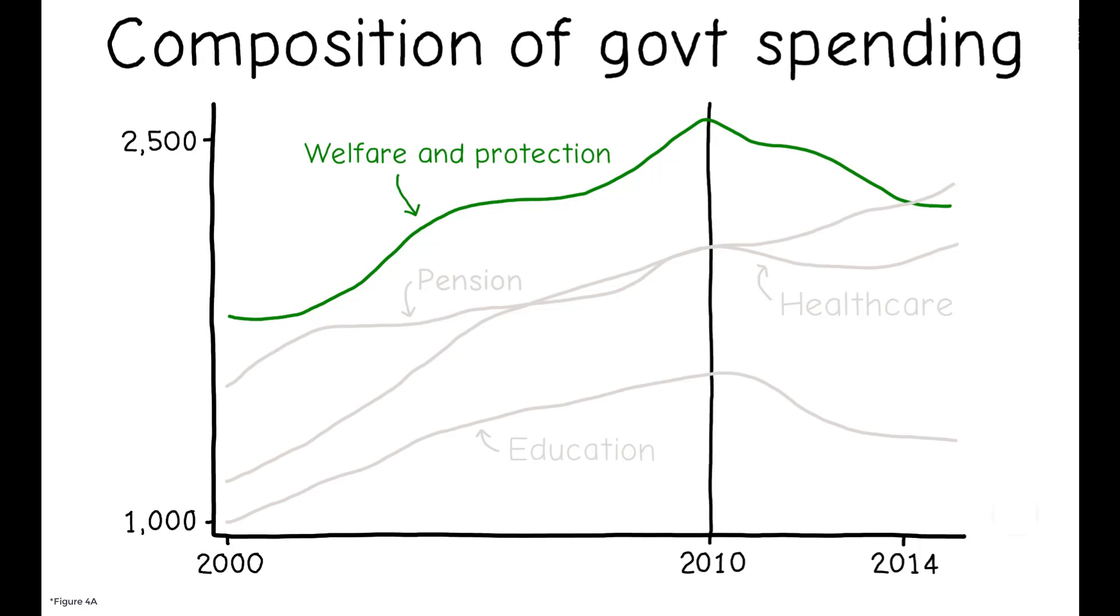Spending on welfare and social protection dropped by 16%, spending on healthcare flatlined despite the increased pressures of a rapidly aging population, and spending on education declined by 19%. At the district level, welfare spending per person fell by 23.4% between 2010 and 2015.